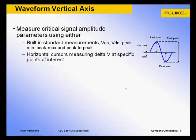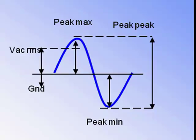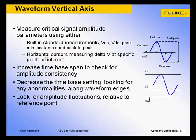Scanning the waveform's vertical axis can be broken into the following aspects. First, measure critical signal amplitude characteristics using either built-in automatic measurements or cursors at very specific points on the waveform. Next, zoom out by increasing the scope time-based setting, looking for consistencies in amplitude from one period to the next. Then zoom in by decreasing the time-based setting to look at the rising and falling edge transitions, specifically looking for any abnormalities, as increasing resolution can uncover hidden problems. Lastly, watch the overall waveform trace for stability, as any vertical fluctuation may indicate improper grounding or common-mode signals influencing the waveform.